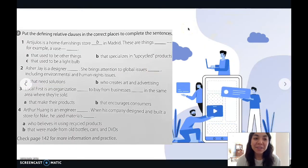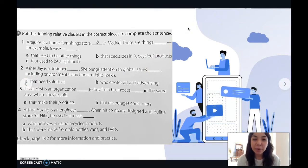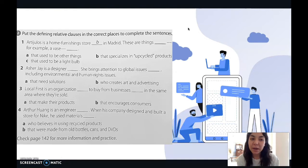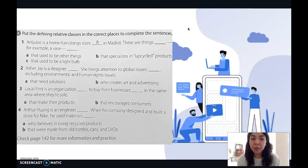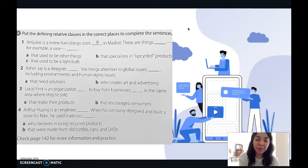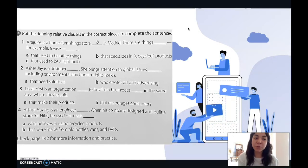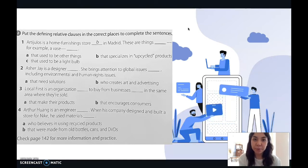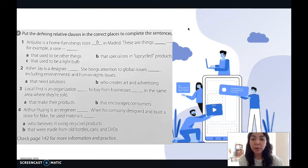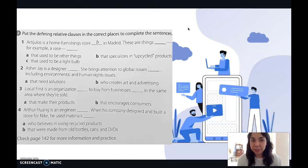In exercise number two, you have some sentences and you can complete them with options A, B, and only in sentence one, C. We're going to do number one and two together, but I want you to do three and four on your own. You can pause the video if you want, or go on with me and check number one and two, then pause.